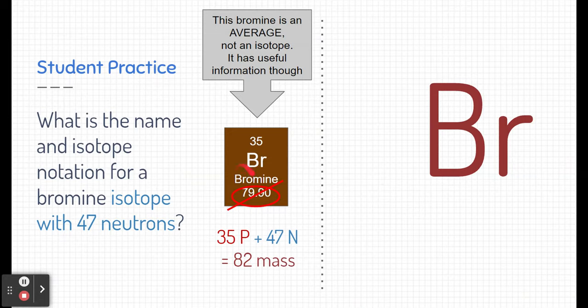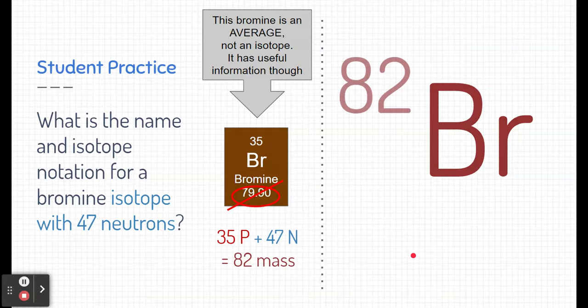Notice again that this 82 does not match up with the average mass. This is not the average bromine. This is our mass of the bromine isotope that we're talking about. So, we're going to write that in the upper left-hand corner, which gives us our answer.